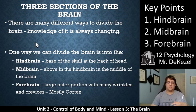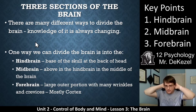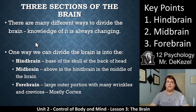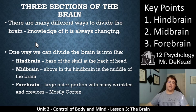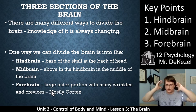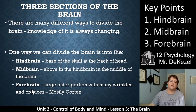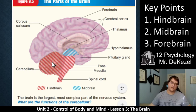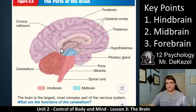One way we can divide the brain is into hindbrain, midbrain, and forebrain. The hindbrain is at the base of the skull at the back of the head. There's the midbrain just above that, and then the forebrain, which is the wrinkly part you usually think of as brain — mostly cortex. The cortex is the wrinkly part, along with a few other structures in the forebrain. In this diagram, the forehead is over here and this person is looking this way.